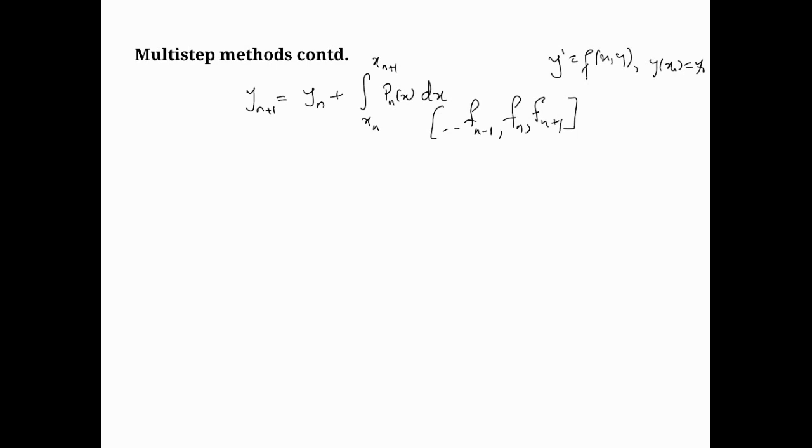What that would mean is then, if I were to apply that to the linear polynomial that we did earlier, then that would mean that p1 of x in this particular instance would be this polynomial. And when we integrate that, the result would be yn plus 1 equals yn plus h over 2, fn plus fn plus 1. Now this is known as the Adams-Moulton second order method.